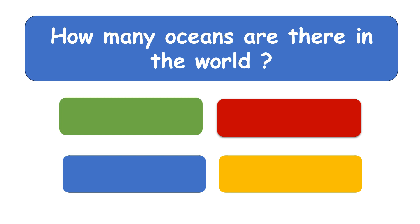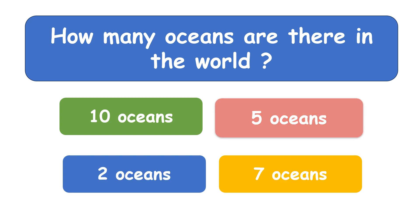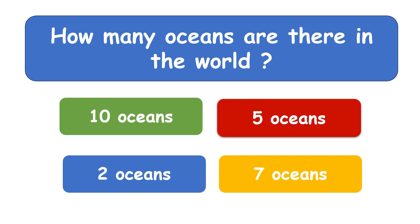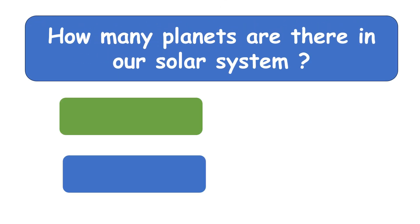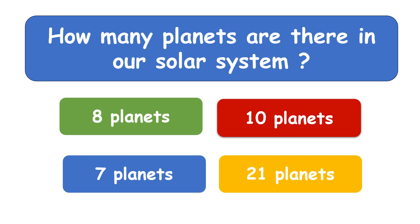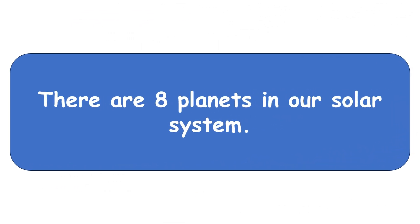How many planets are there in the solar system? Eight planets. There are eight planets in our solar system.